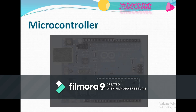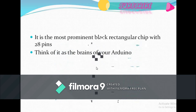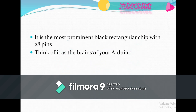The next component is the microcontroller — the black chip you can see here on the Arduino board. It acts as the main processor, or brain, of the Arduino board and is the most important part. It is the most prominent black rectangular chip with 28 pins.